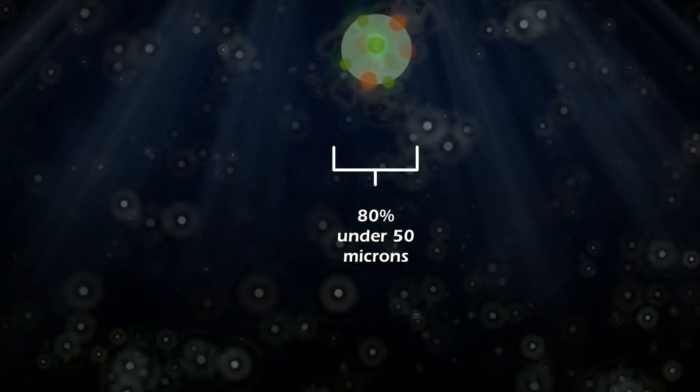The result? Particles from 10 to 80 microns with over 80% under 50 microns. This is an ideal size range for microplankton feeders.